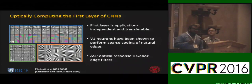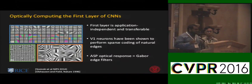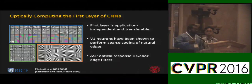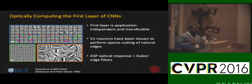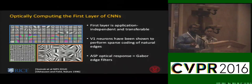If you look at the first layers of CNNs trained on visual recognition tasks, they are typically oriented edge and color filters. This first layer has been shown in previous work to be application-independent and transferable — many first layers trained on ImageNet can be used for other tasks with fine-tuning. There is a biologically plausible explanation in that V1 neurons perform sparse coding on natural edge statistics with Gabor-like wavelet filters.